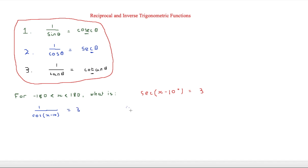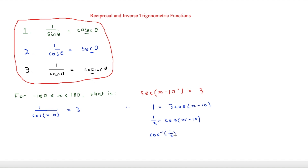Therefore we have 1 equals 3cos(x minus 10). By doing this step we've got it into the form we would normally see when solving a trig identity. Now all we need to do is divide both sides, giving one third equals cos(x minus 10). Then we apply the inverse function: cos minus one of one third equals x minus 10.